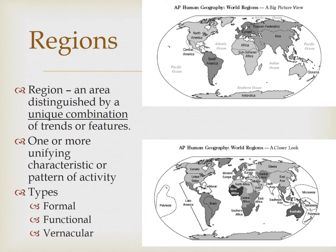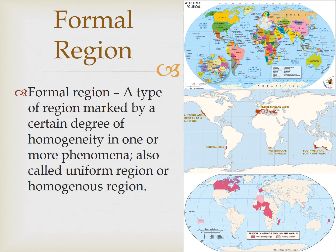Those three categories are formal, functional, and vernacular. A formal region is a type of region marked by a certain degree of homogeneity in one or more phenomena, also called a uniform region or homogenous region. Formal regions share at least one trait, whether that's physical or human — there's something in common within the boundaries of that region.